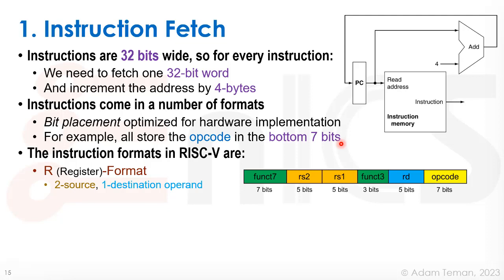There are four major instruction formats, with a few variations. The R-format (register) has two source operands rs1 and rs2 and one destination operand rd. The opcode is in the bottom seven bits; rs1 and rs2 are each five bits because we have 32 registers and need five bits to address them. There are also ten additional bits — func7 and func3 — that can encode different variations and additional operations.